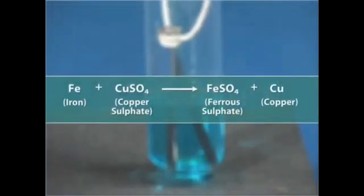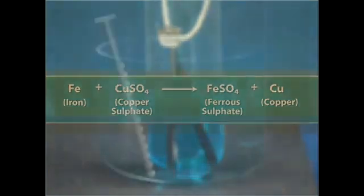What is the reason behind these changes? When iron nails are dipped in copper sulphate solution, the iron metal reacts with copper sulphate which results in the formation of ferrous sulphate and copper metal.